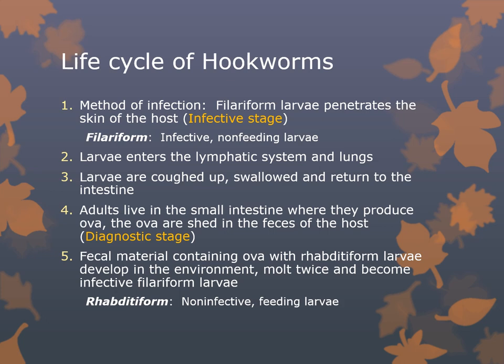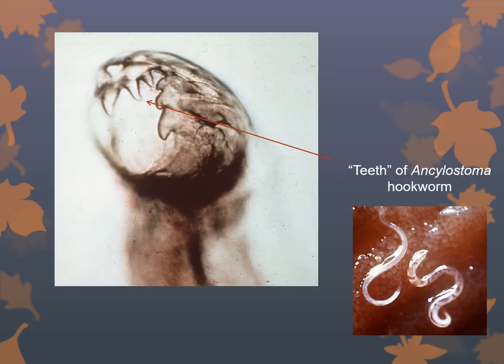The adult Ancylostoma hookworm is about 5 to 13 millimeters long, or about 400 micrometers. They are voracious bloodsuckers — you can lose up to 100 milliliters of blood per day, leading to iron deficiency anemia.